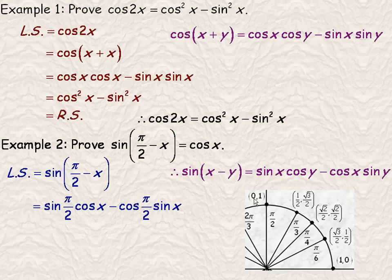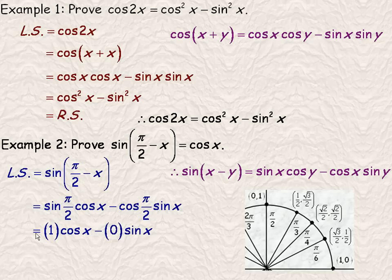Remember, the x-coordinate is the cosine of the angle, and the y-coordinate is the sine of the angle. So that means that the cosine of π/2 is 0, and the sine of π/2 is 1. So making those substitutions, the sine of π/2 is 1. That's the y-coordinate.